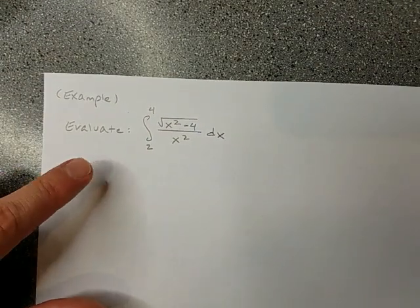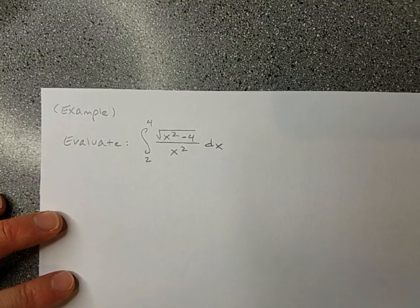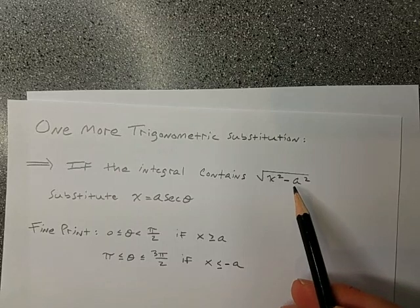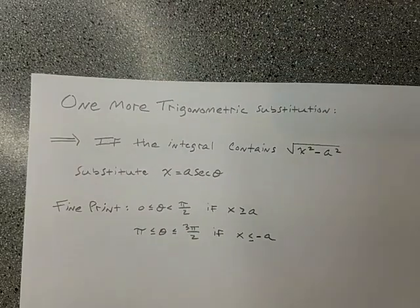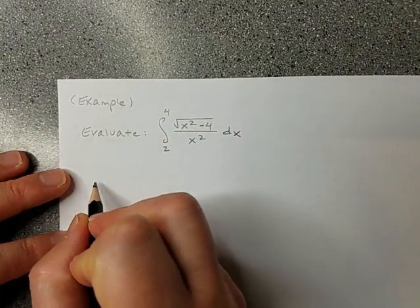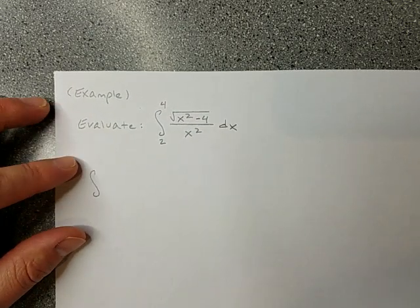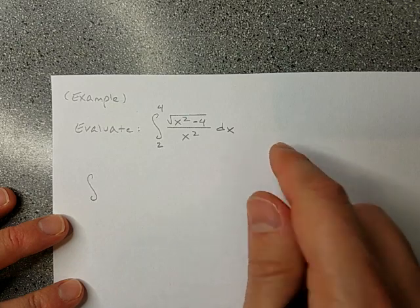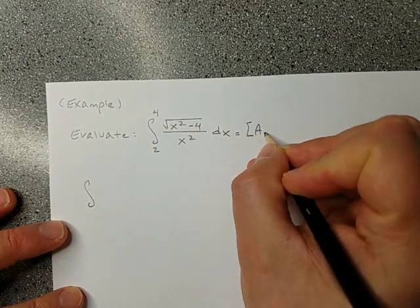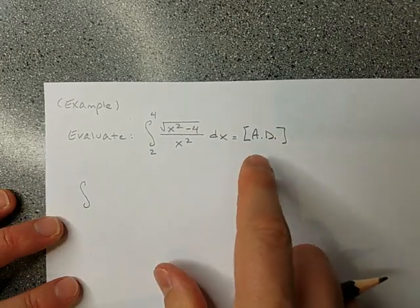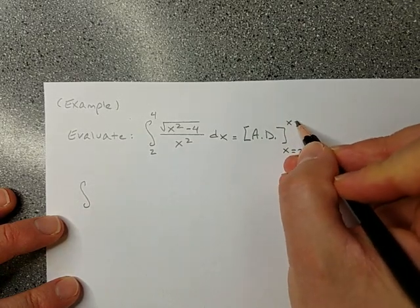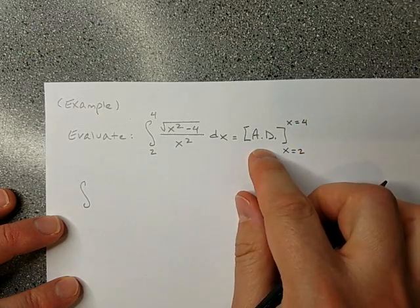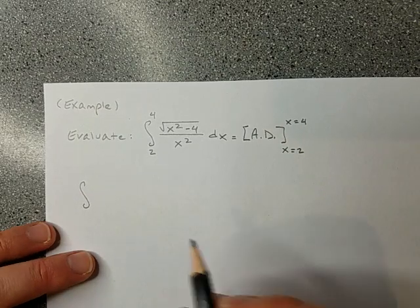Let's do this problem: evaluate this definite integral with these bounds. This does have that expression root x squared minus a squared, and a appears to be 2, since x squared minus 4 is x squared minus 2 squared. So our substitution is going to be x equals 2 secant theta. I'll work this as an indefinite integral first to find the antiderivative.